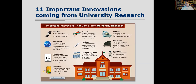A number of important innovations came from university research. The seatbelt's first modern version was developed at Cornell University. Many aspects of the internet were developed at universities. The periodic table was created by Mendeleev, a professor at St. Petersburg University. Rocket fuel came from Clark University; Gatorade from the University of Florida; flu shots from the University of Rochester; CT scanning from Georgetown University; solar power and photoelectric cells from MIT; and ultrasound from the University of Vienna.